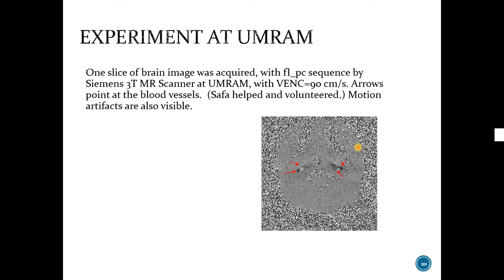I also did an experiment at UMRAM. Here is shown a slice of brain image with flow PC sequence by 3 Tesla MR scanner. The VENC was chosen as 90 cm per second. It was a single direction. These arrows are pointing at the blood vessels. Safa helped and volunteered for this experiment. There are some motion artifacts which are also visible.